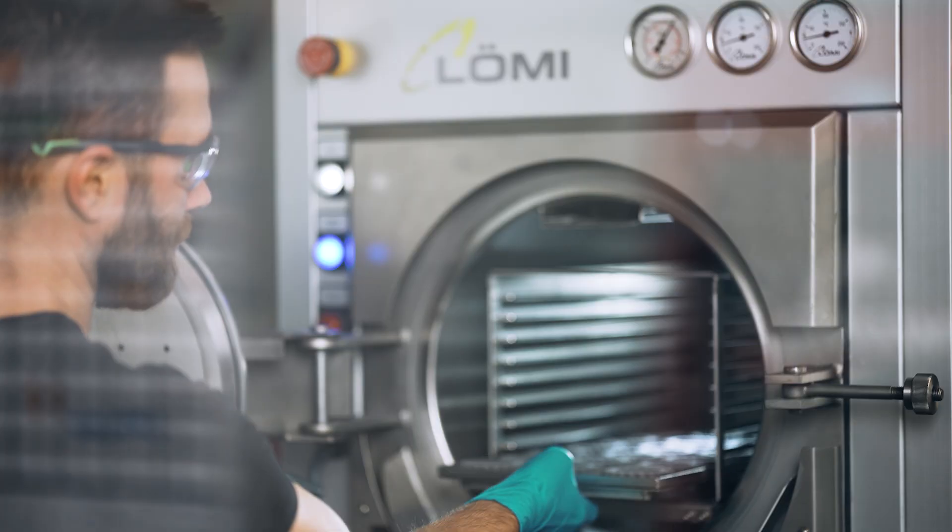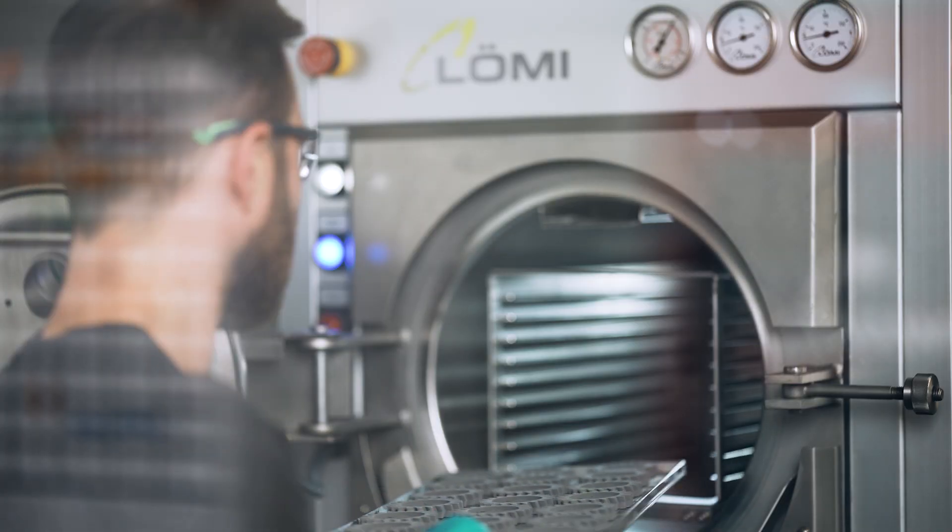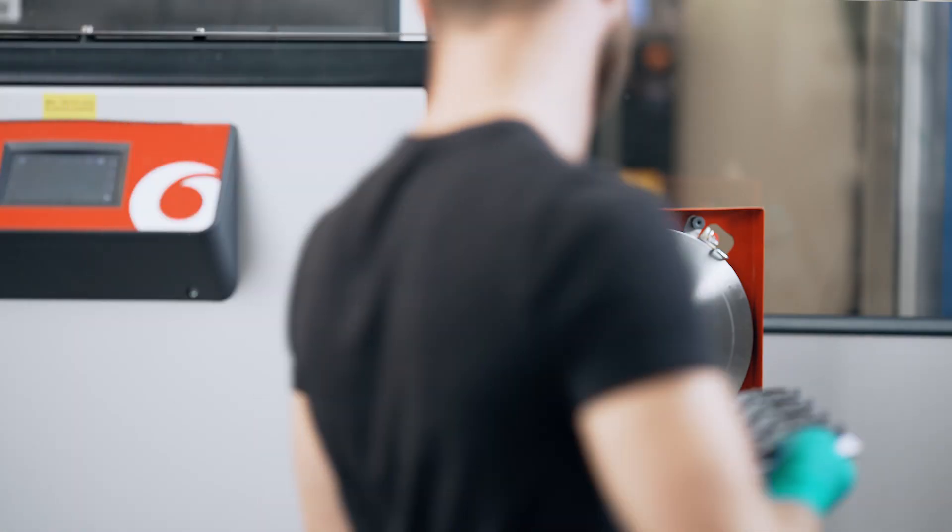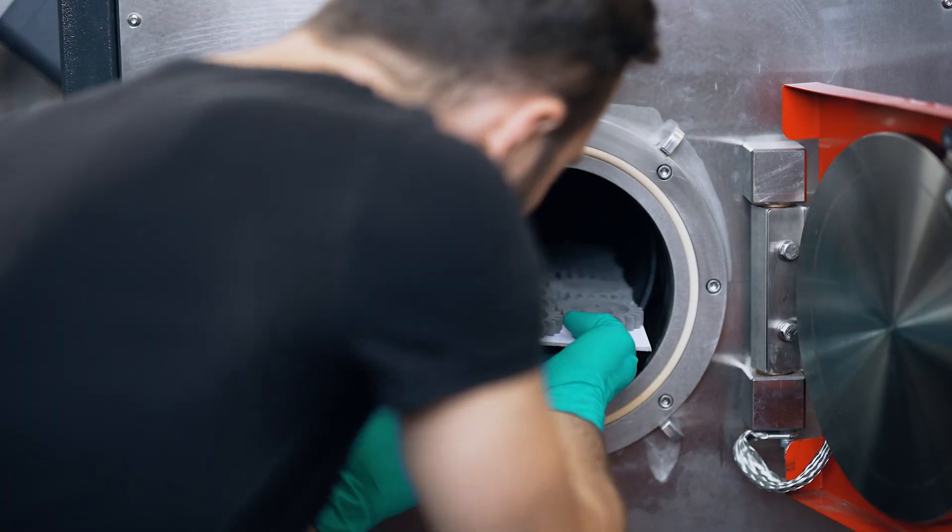After a night of debinding you can take out your parts and now we call them brown parts. They will now be loaded on another tray and will go into our furnace for sintering.